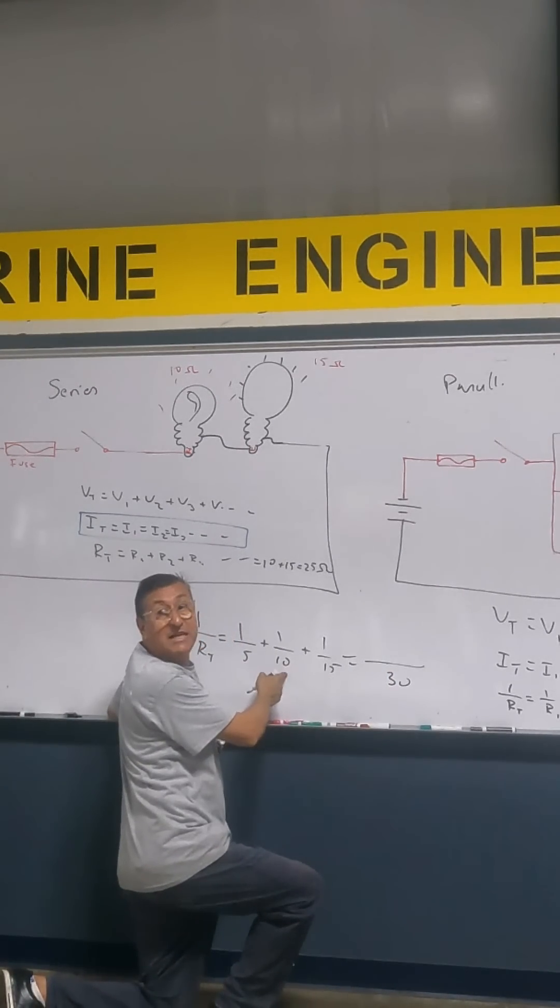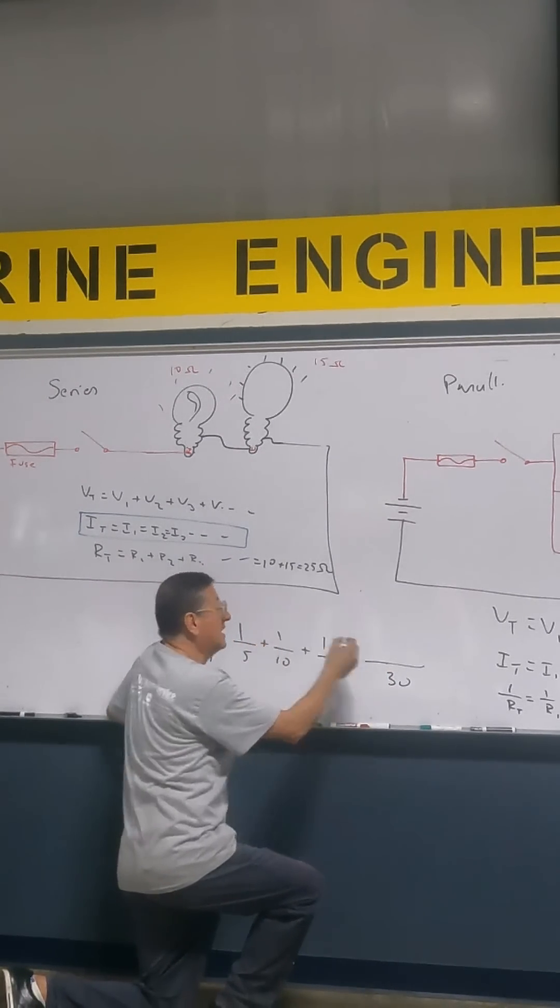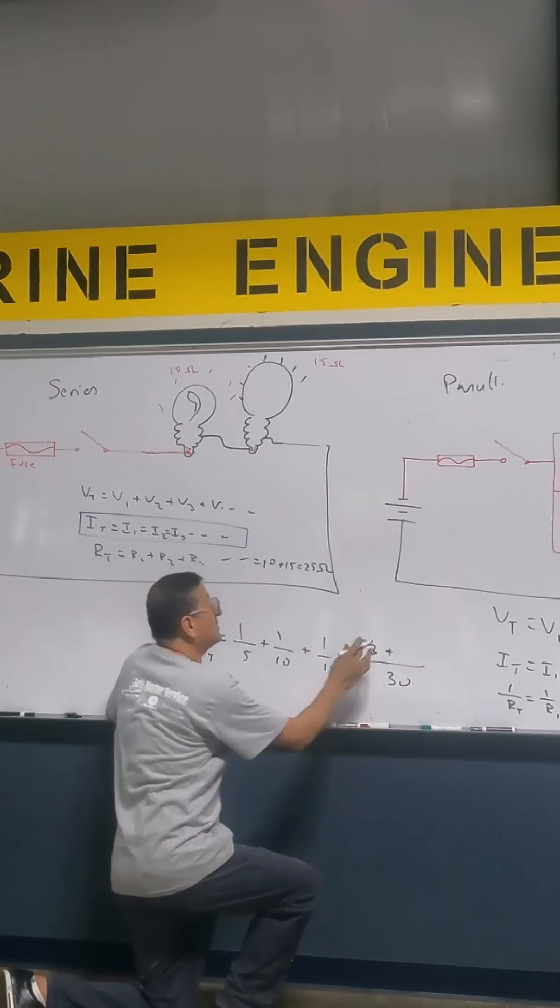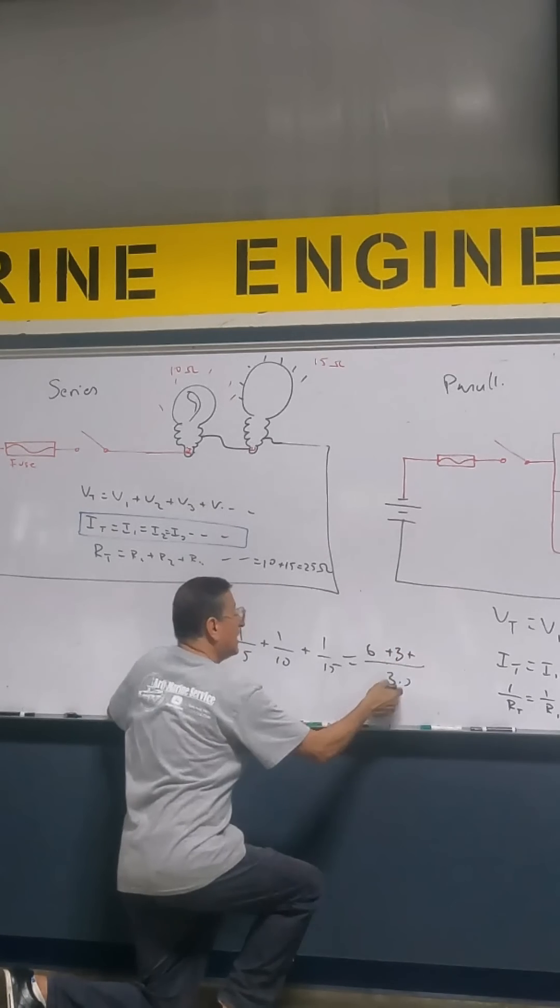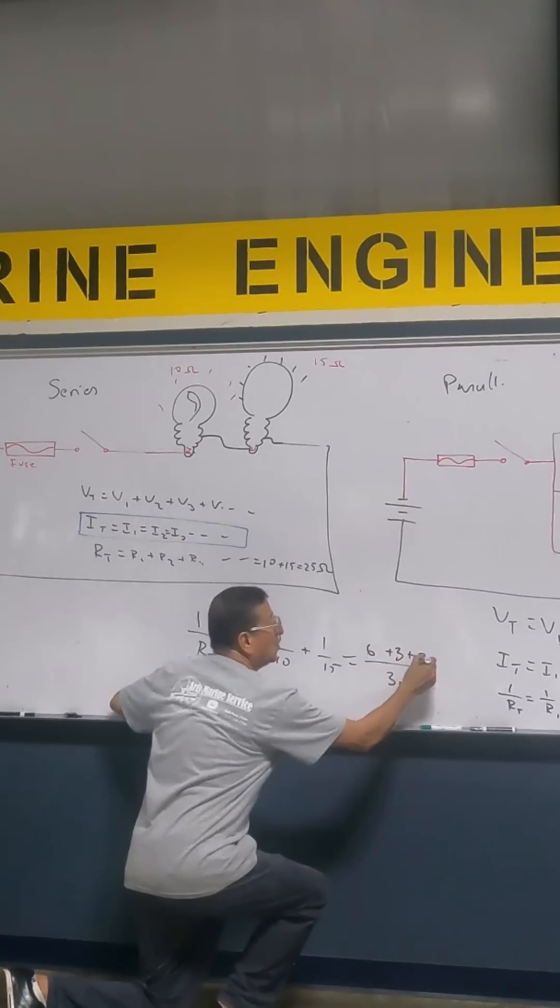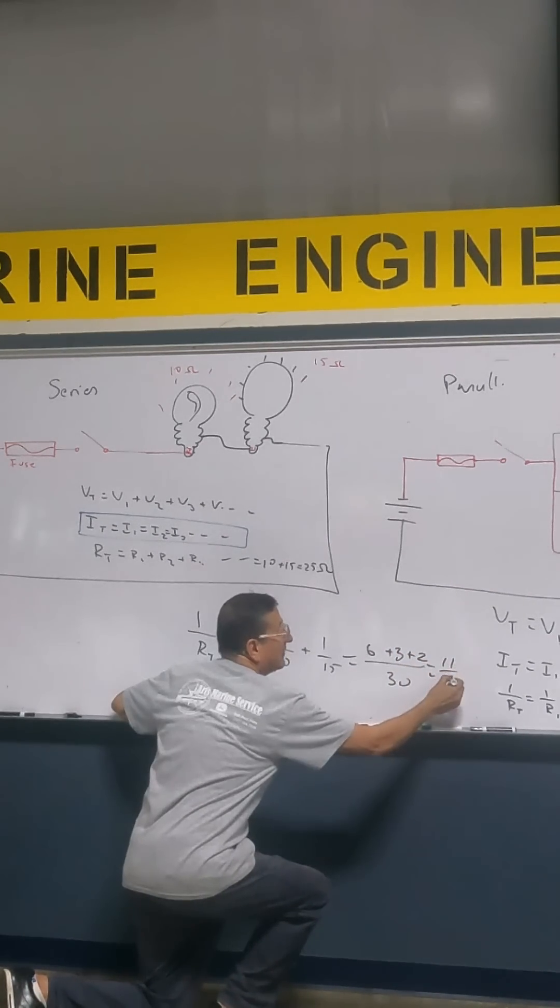30 into 10, how many times? 3. 3 times what? 3. Plus 30 into 5 is 6. 30 into 10, 3. 30 into 15, 2. How much is that? 11 divided by 30.